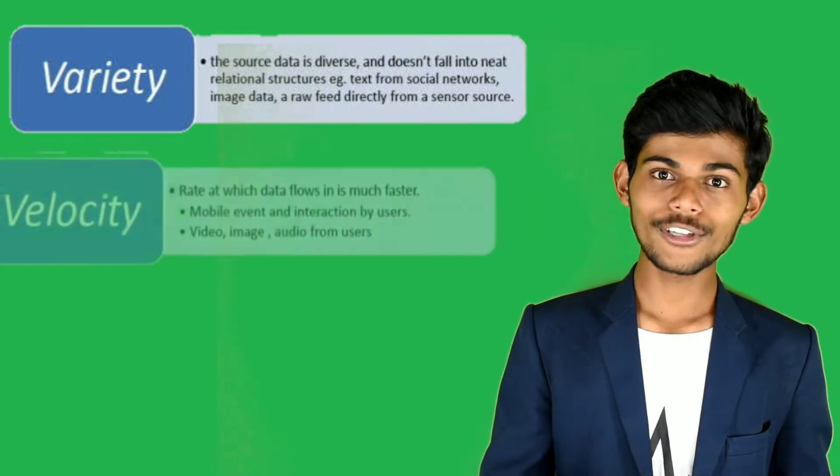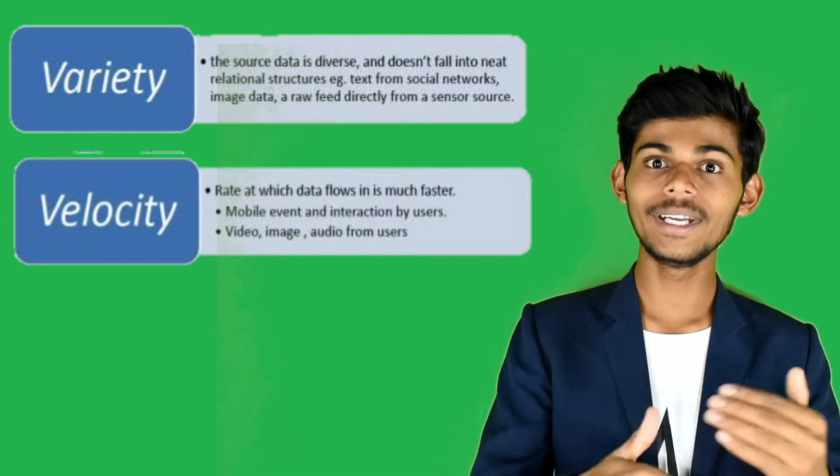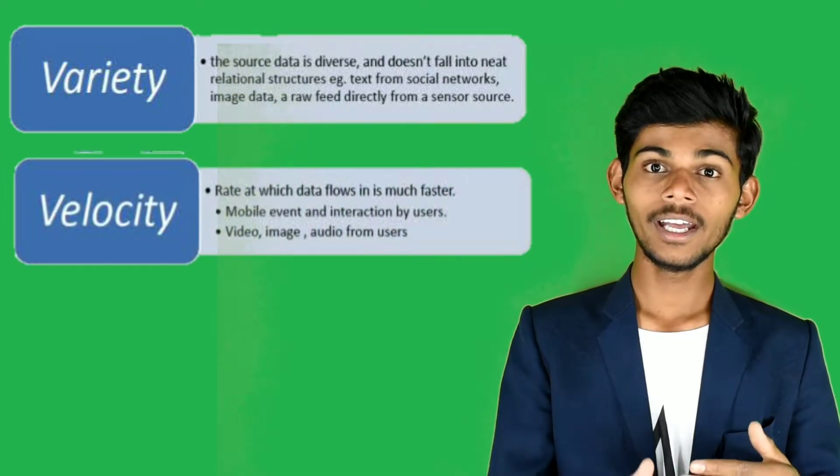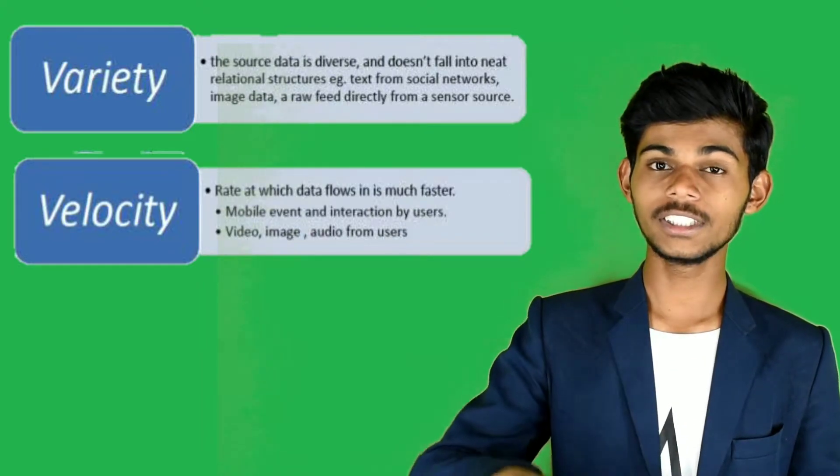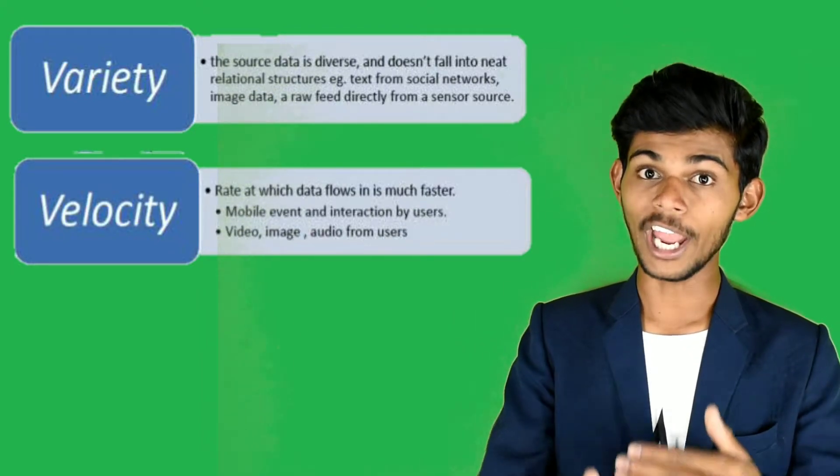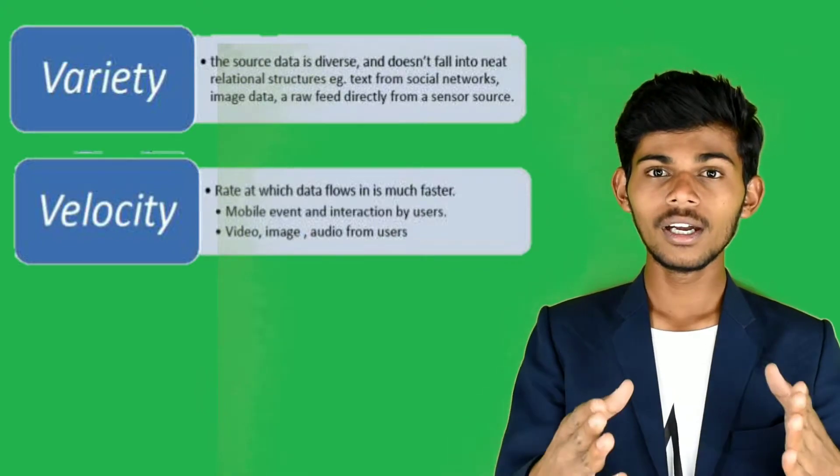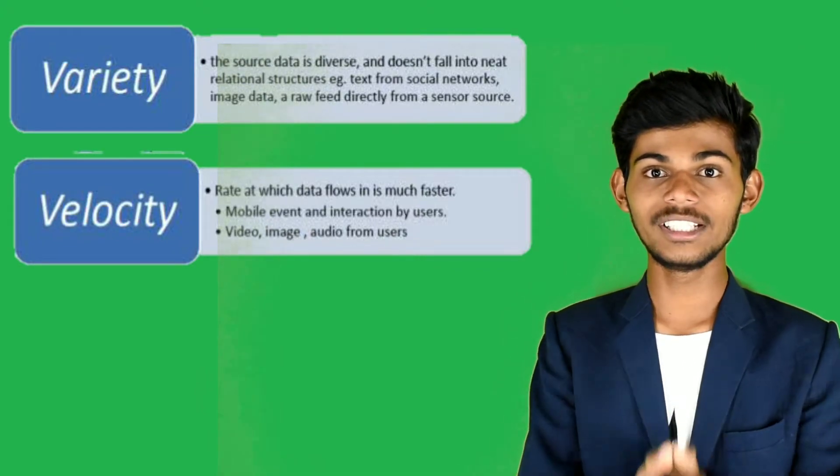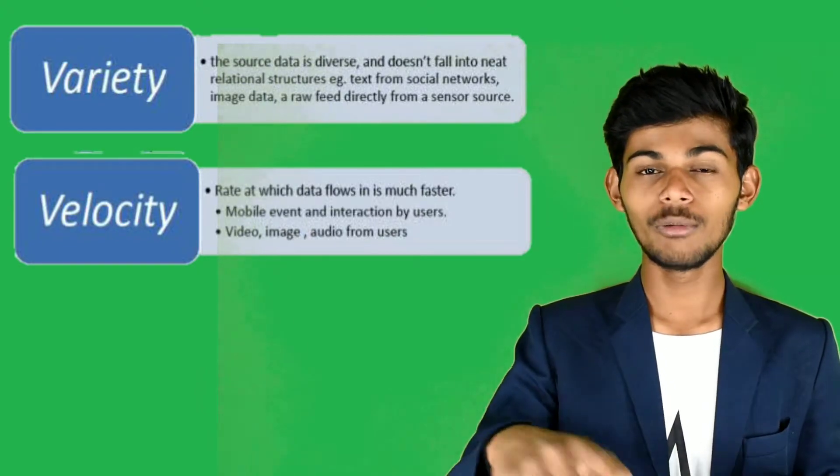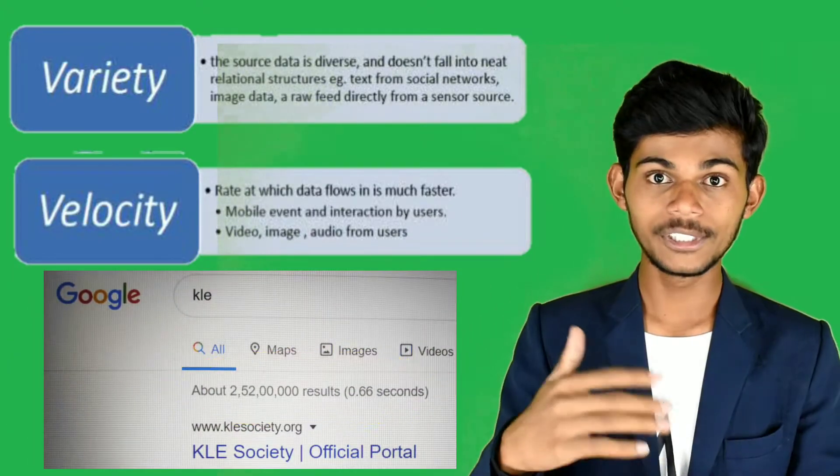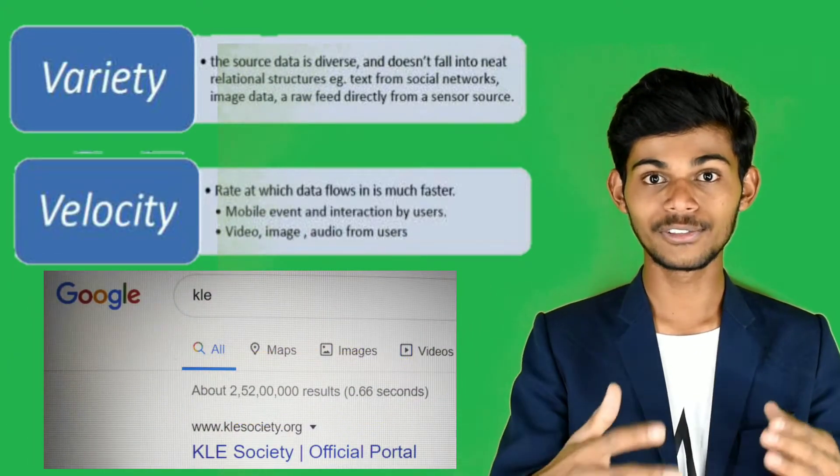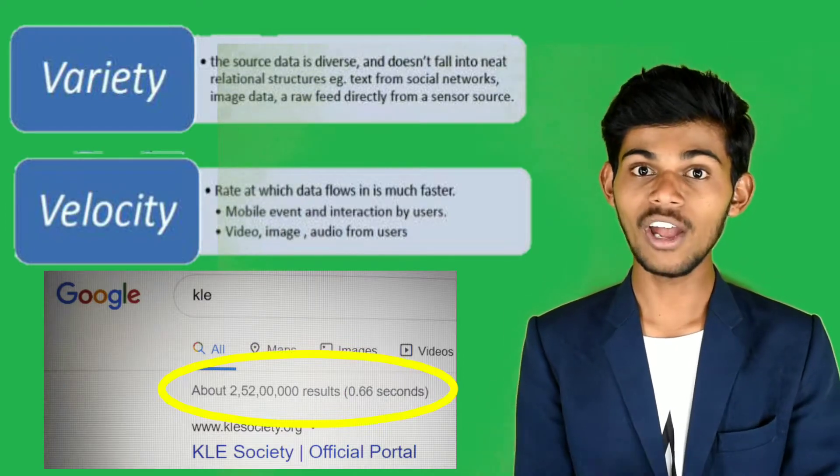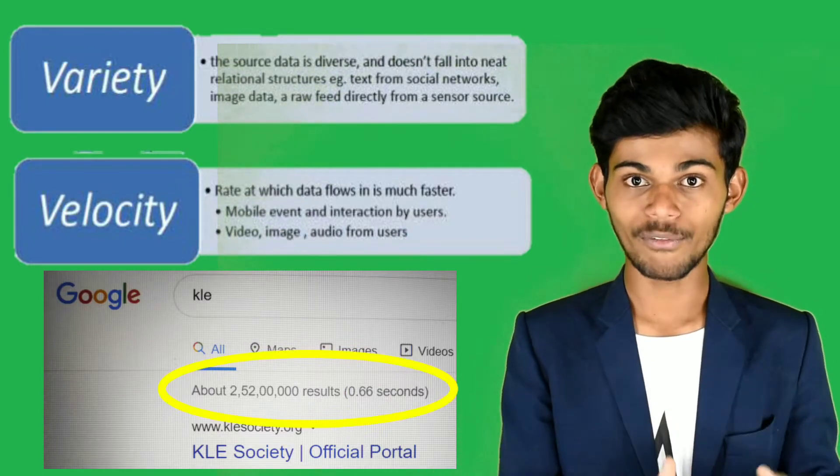And second one, velocity. Velocity means the high speed data transfer rate and huge amount of data processing in very less time, fraction of a second. For example, real-time example, you will see in Google. Google will show you results in 0.06 seconds. Up to 60 lakh or 1 lakh results will show you in Google for the particular data which you need. How is that possible?